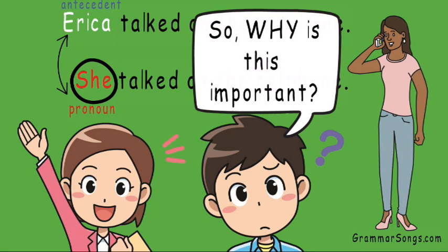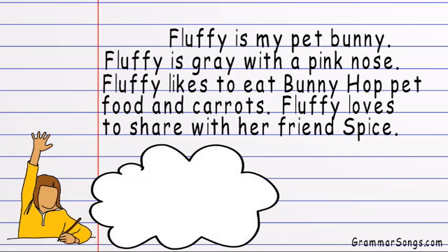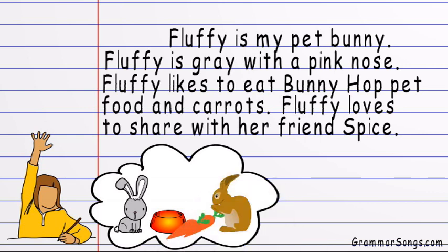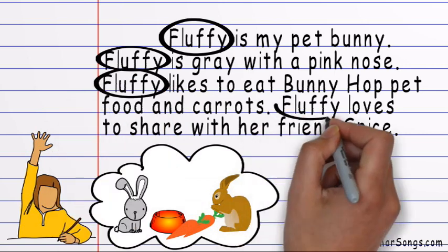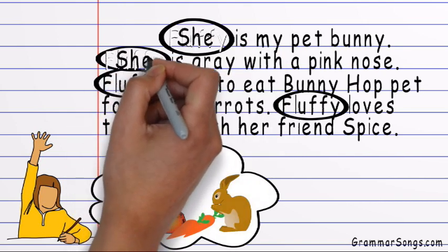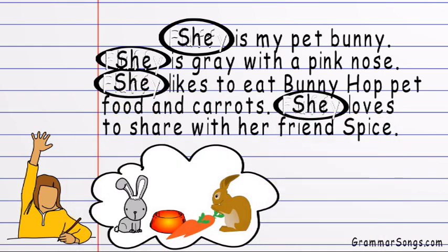So why is this important? This is important because when you are writing multiple sentences or paragraphs, you need to communicate clearly so your reader can understand your message. Consider: Fluffy is my pet bunny. Fluffy is gray with a pink nose. Fluffy likes to eat bunny hop pet food and carrots. Fluffy loves to share with her friend Spice. Overusing your subject — in this case, Fluffy — detracts from your writing. As a writer, you want to use subject pronouns to make your writing less choppy, but if you change all of the 'Fluffys' to 'she,' your reader would have no idea who you are writing about.